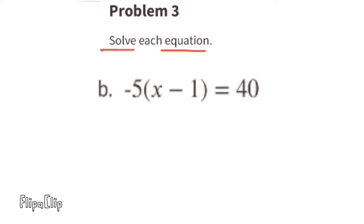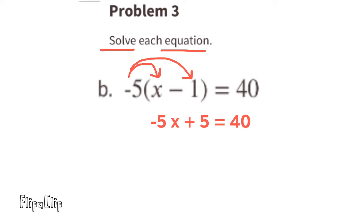Part b: negative 5 times (x minus 1) equals 40. Distribute: negative 5 times x is negative 5x, and negative 5 times negative 1 is positive 5. So negative 5x plus 5 equals 40. Subtract 5 from both sides.